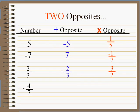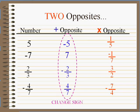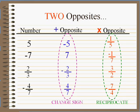In general, when we find the additive opposite, if there's a negative we take it away; if there isn't, we put one. When we find the multiplicative opposite, we just flip it — we don't take away a negative or add a negative. The additive opposite changes the sign. The multiplicative opposite, we reciprocate. There are two types of opposites in math.